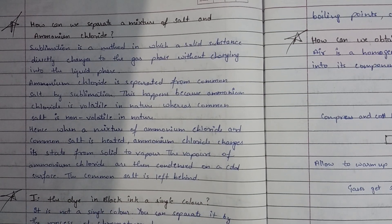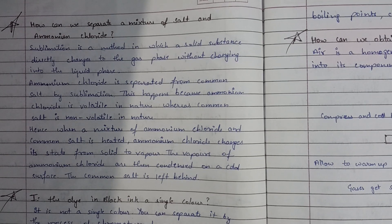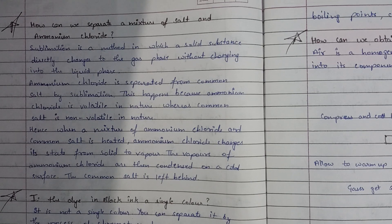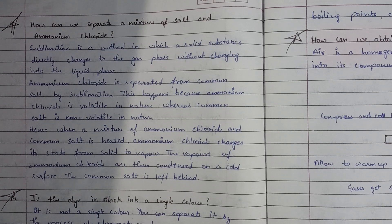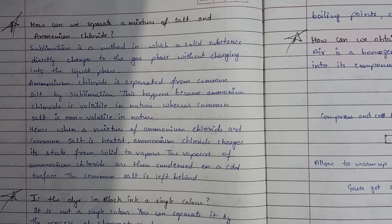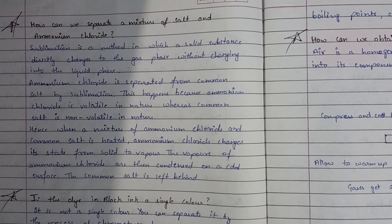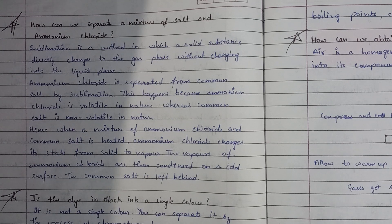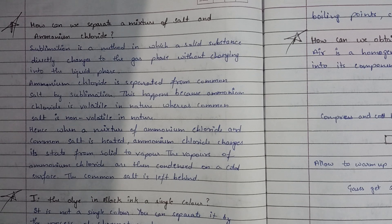The vapors of ammonium chloride are then condensed on a cold surface, and the common salt is left behind. In sublimation, the solid is converted directly into the gas phase without passing through the liquid phase. Ammonium chloride is volatile in nature while common salt is non-volatile and will not be converted to vapors. So when we heat the mixture, ammonium chloride changes from solid to vapors, and when we condense the vapors on a cold surface, it separates, and the salt remains behind.